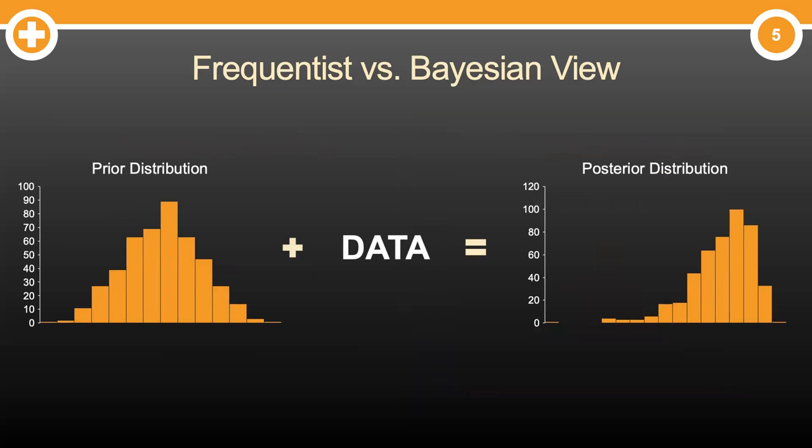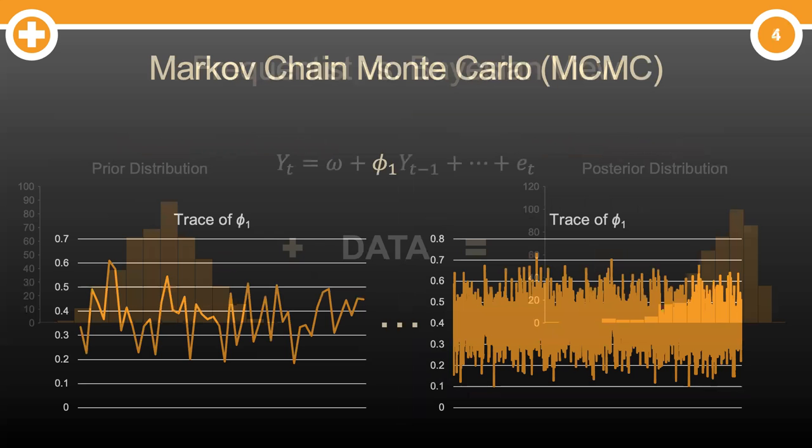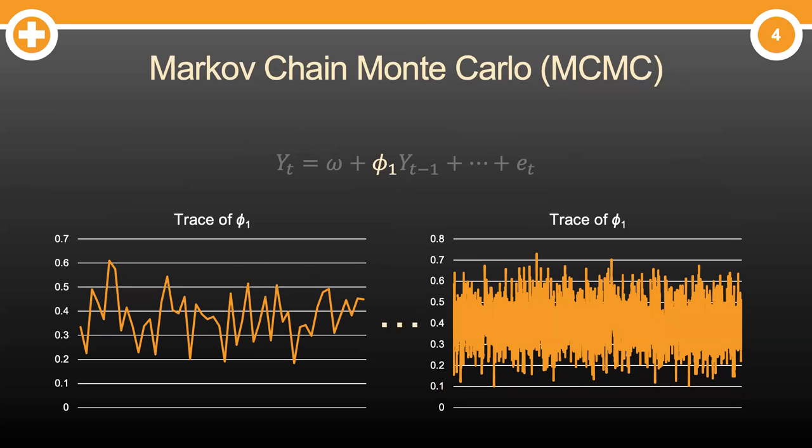Basically, a Bayesian takes their prior belief, called the prior distribution, combines it with data, and then updates their belief based on that combination to what is called the posterior distribution. But how do we estimate the parameters from our model through something we call Markov chain Monte Carlo techniques?